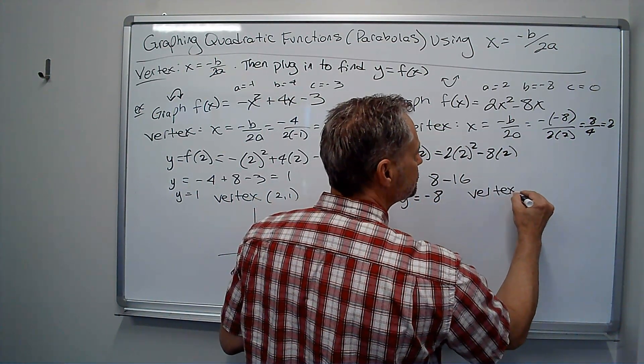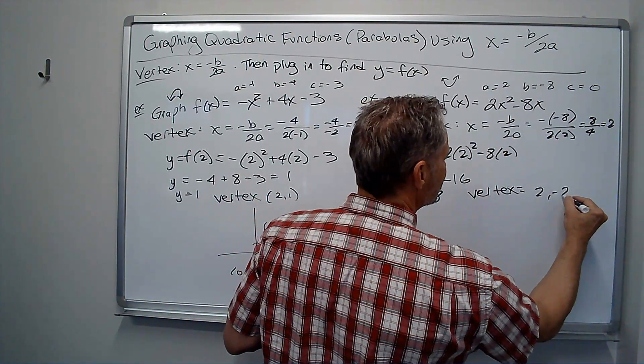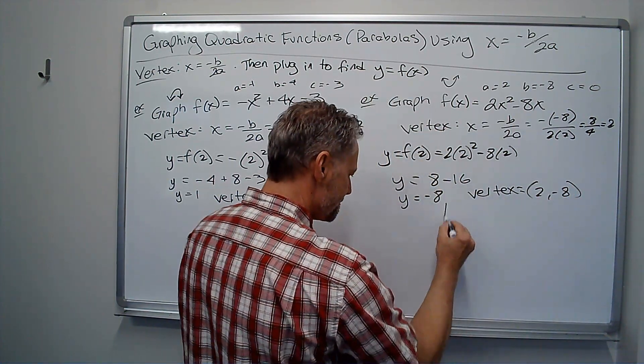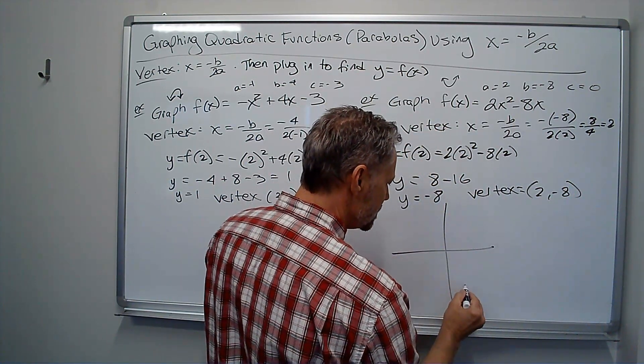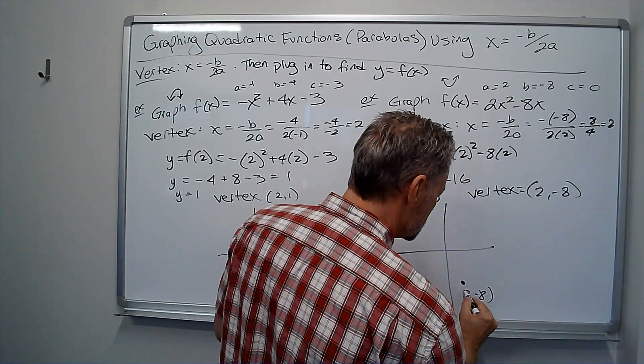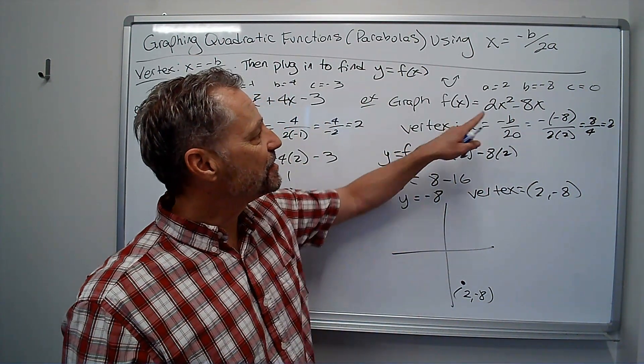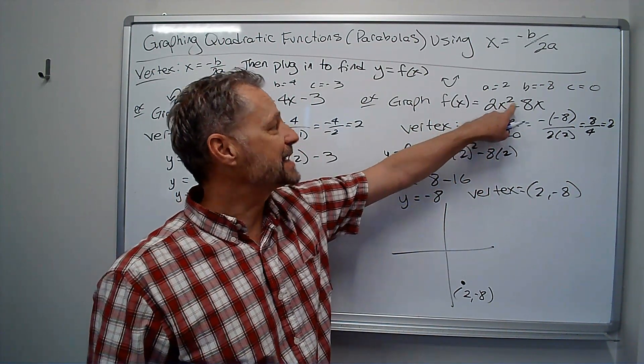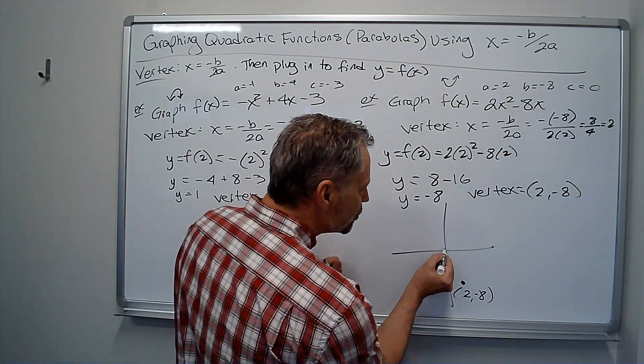So my vertex, we'll go ahead and label it, 2 negative 8. 2 negative 8, way down here. Now this time, if I plug in x equals 0, I get y equals 0. So that means it crosses here. My y intercept is the origin, 0, 0.